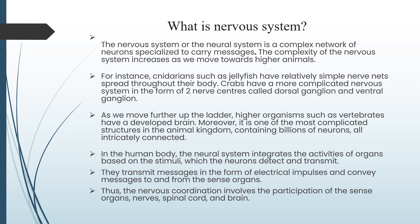Crabs have a more complicated nervous system in the form of two nerve centers called dorsal ganglion and ventral ganglion. As we move further up the ladder, higher organisms such as vertebrates have a developed brain. Moreover, it is one of the most complicated structures in the animal kingdom, containing billions of neurons all intricately connected. In the human body, the neural system integrates the activity of organs based on the stimuli which the neurons detect and transmit.